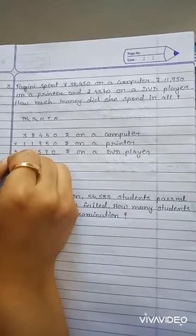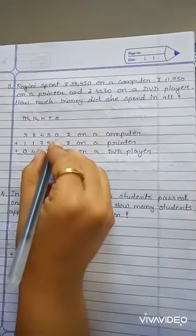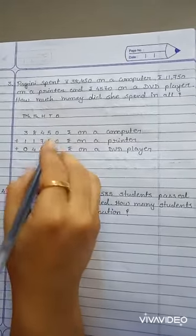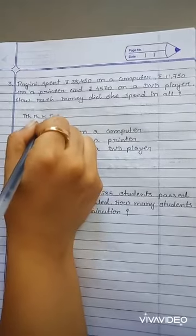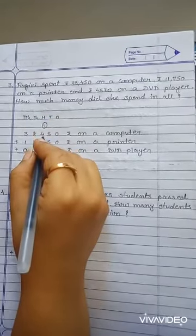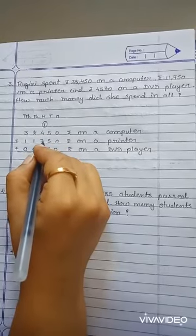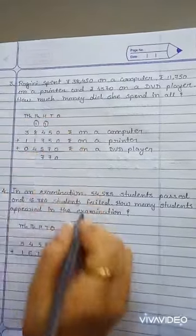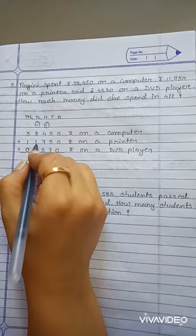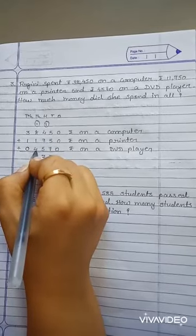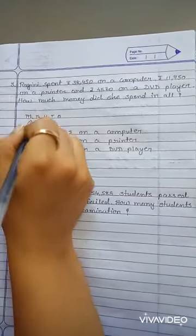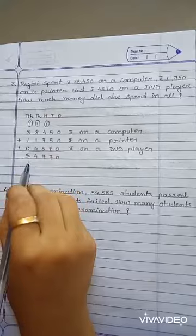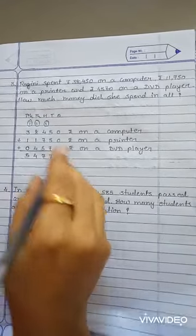Here, rupees 10,000 place is not given, so 0. 0 plus 0 plus 0 equals 0. 5 plus 5 equals 10. 10 plus 7 equals 17, 7, carry 1. 1 plus 4 equals 5, 5 plus 7 equals 12, plus 5 equals 17, 7, carry 1. 1 plus 8 equals 9, 9 plus 1 equals 10, plus 4 equals 14, 4, carry 1. 1 plus 3 equals 4, 4 plus 1 equals 5. Answer is rupees 54,770.